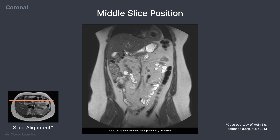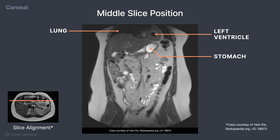At this slice, we can see the air-filled lungs again, with a portion of the left ventricle of the heart. The stomach is visible, and fluid within appears bright due to this being a T2-weighted image.